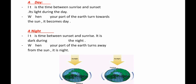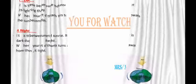In summary, Earth rotates around itself producing day and night, completing one turn every 24 hours. Day is the time between sunrise and sunset — when your part of Earth turns towards the Sun, you see the sunlight and it is daytime. Night is the time between sunset and sunrise — when your part turns away from the Sun, it is dark and you are in the nighttime. Thank you for watching, goodbye.